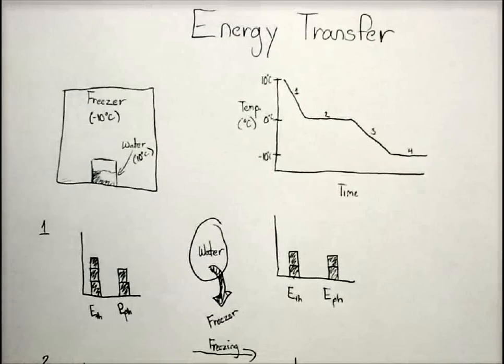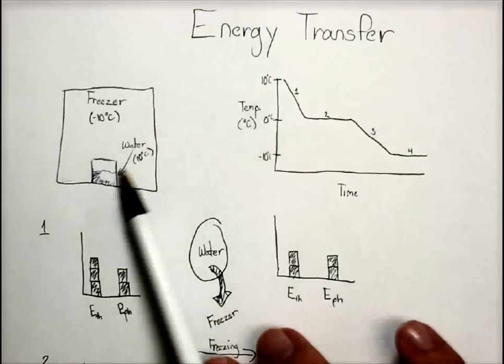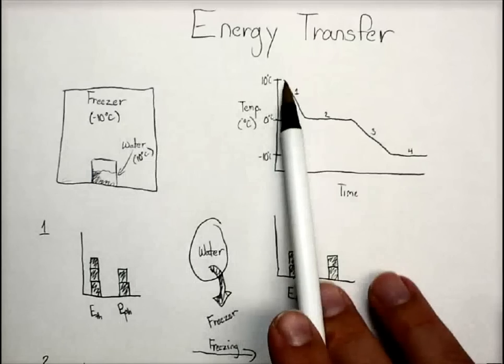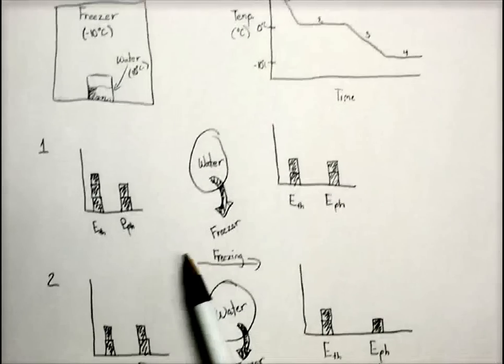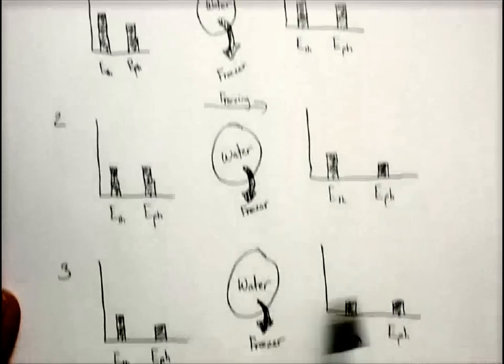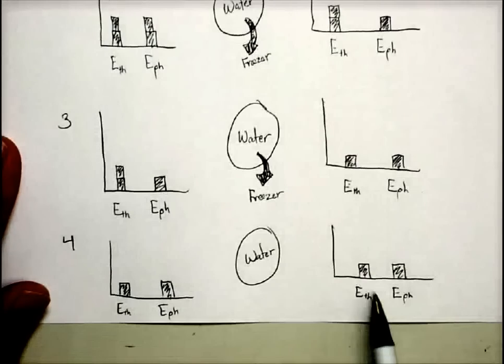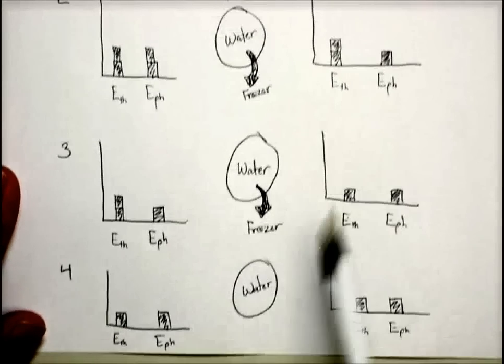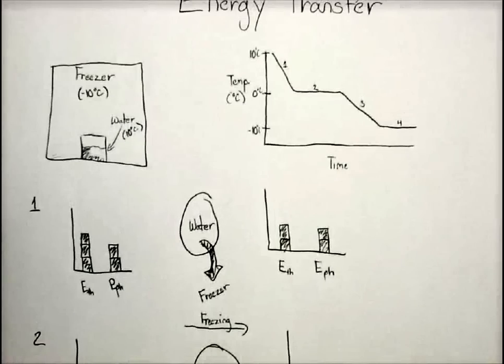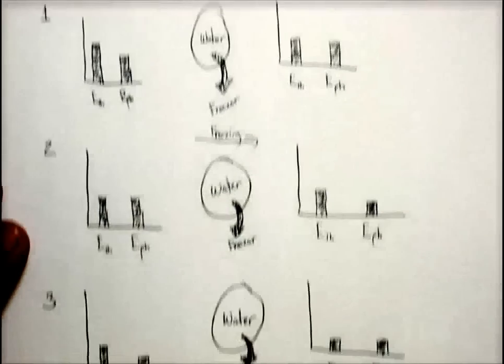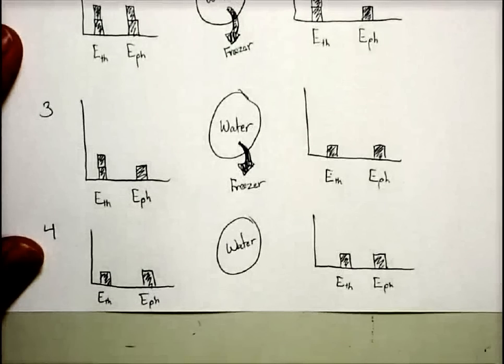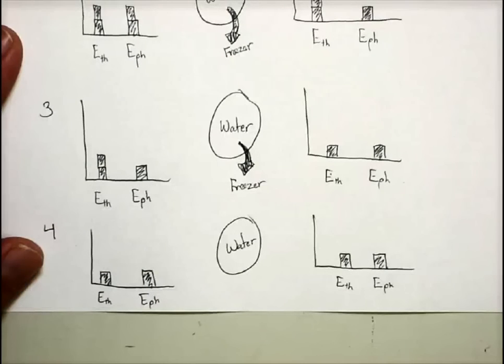So in all of that, phew, lots of work there. We've seen that for this situation, water in the freezer, each part of this graph, each distinct region, can get its own LOL chart. And we can see what's going on using those, as far as the energy is concerned, for each one of those regions. So anytime you do these LOL graphs, make sure you are doing them just like I showed you here. Include all the details. Can't leave anything out.